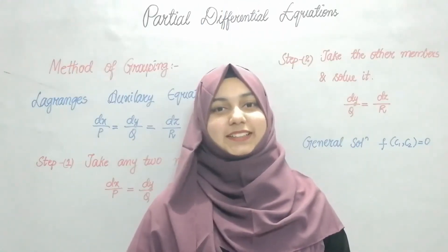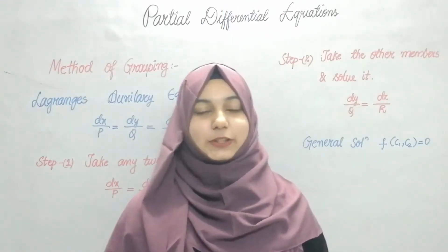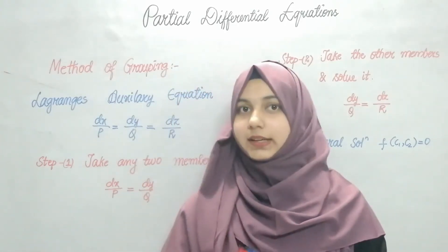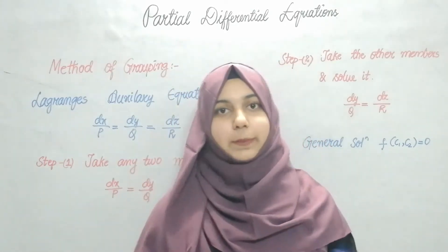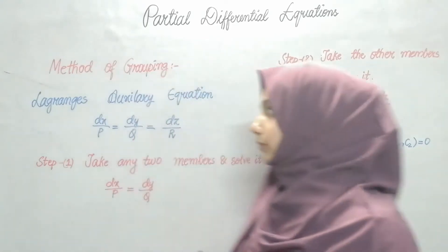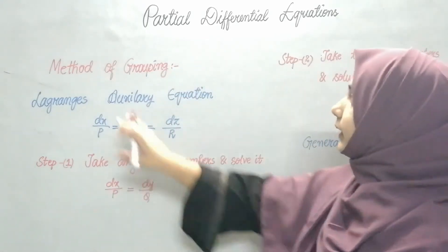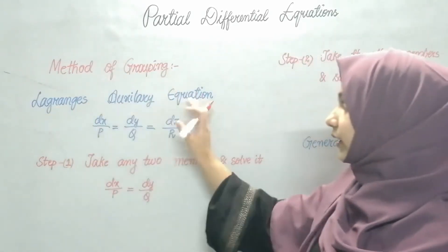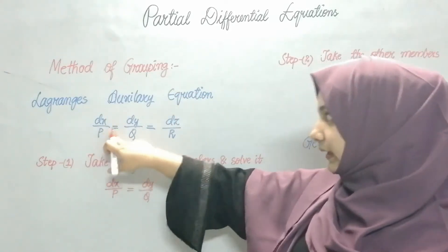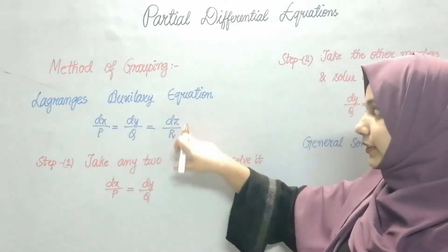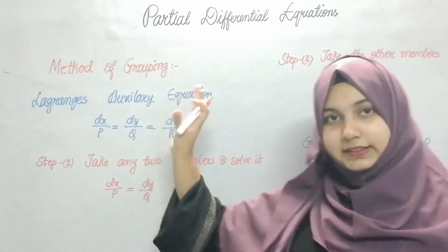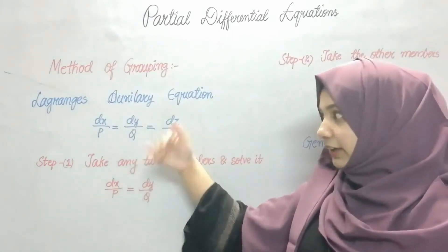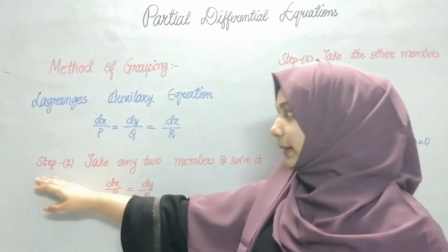As-salamu alaykum everyone. In this video we will see Method 1, that is the method of grouping in Lagrange's equation — method of grouping — and how we are going to solve it. The Lagrange's auxiliary equation is dx/P = dy/Q = dz/R. You will convert the given equation into this form, and after that, Step 1 is to take any two members and solve it.